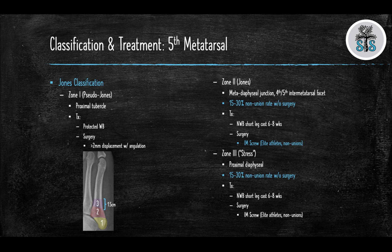Zone 3 is where stress fractures can occur. This area starts at the end of zone 2 and extends 1.5 cm distally, representing the proximal diaphysis. The non-union rate is quite high at 15–30% without surgery, and the same treatment algorithm used for Jones fractures is applied.